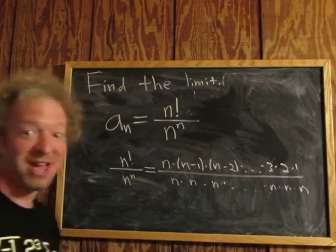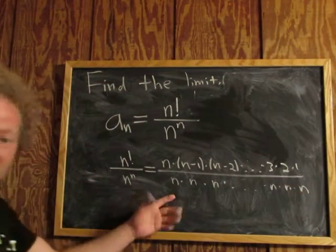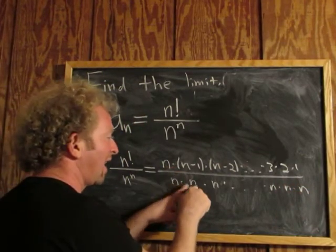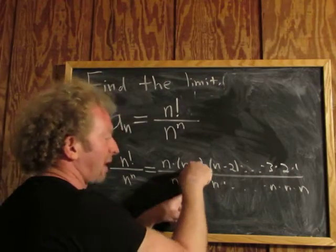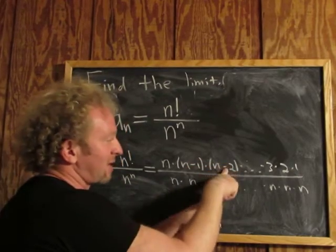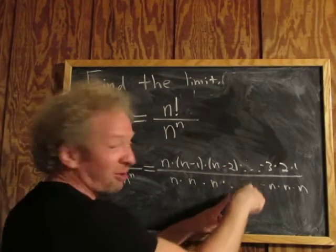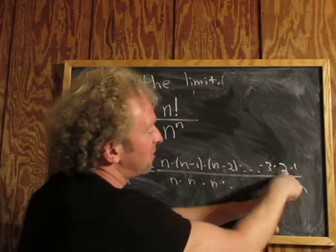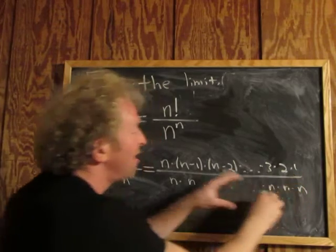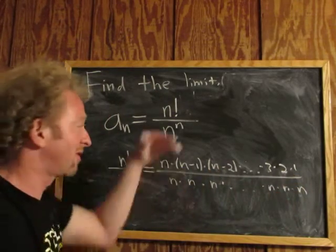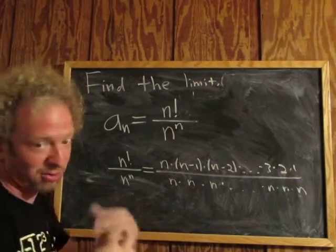So obviously what grows faster at the bottom is n to the n. n is bigger than n minus 1, n is bigger than n minus 2, n is bigger than all of these guys — n is bigger than 3, bigger than 2, bigger than 1. So the bottom is obviously going to grow faster than the top as n approaches infinity.